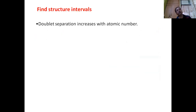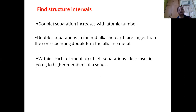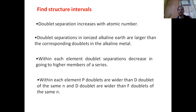Based on experiment, there are certain observations about fine structure intervals. Doublet separation increases with atomic number. Doublet separations in ionized alkaline earth are larger than the corresponding doublets in the alkaline metal. Within each element, doublet separations decrease in going to higher members of a series. Within each element, p doublets are wider than d doublets of the same n, and similarly d doublets are wider than f doublets of the same n.